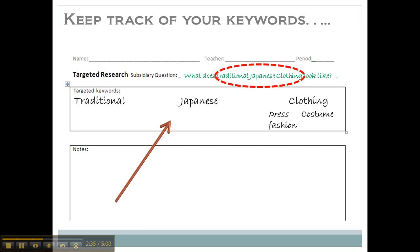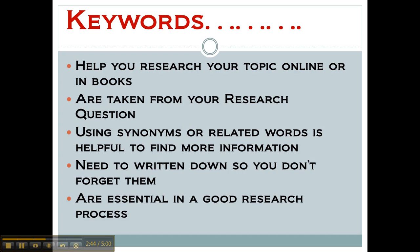As you research further, you can find more keywords, and we'll talk about that in a different video. But for now, let's review. Keywords help you research your topic online or in books, and they're taken from the actual research question you are needing to answer. You need to use synonyms or related words so you can find more and different information, and you need to write them down so you don't forget them and you know what you've already used. Keywords are really important and essential in a good research process.